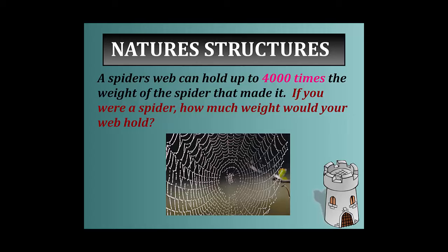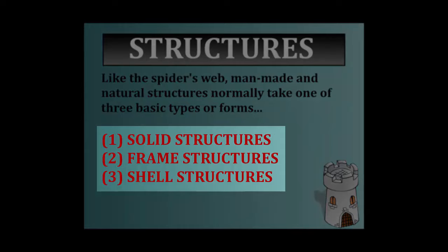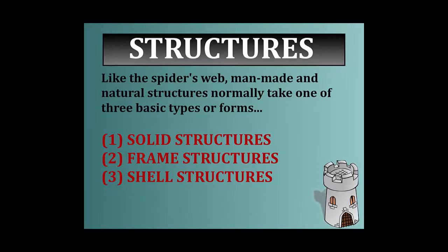If you were a spider, how much weight would your web be able to hold? We see different structures in different forms, and like the spider's web, man-made and natural structures normally take one of three basic shapes or forms. These basic shapes are the solid structures, the frame structures, and the shell structures. We're going to take a look at each one of these and what exactly they look like.